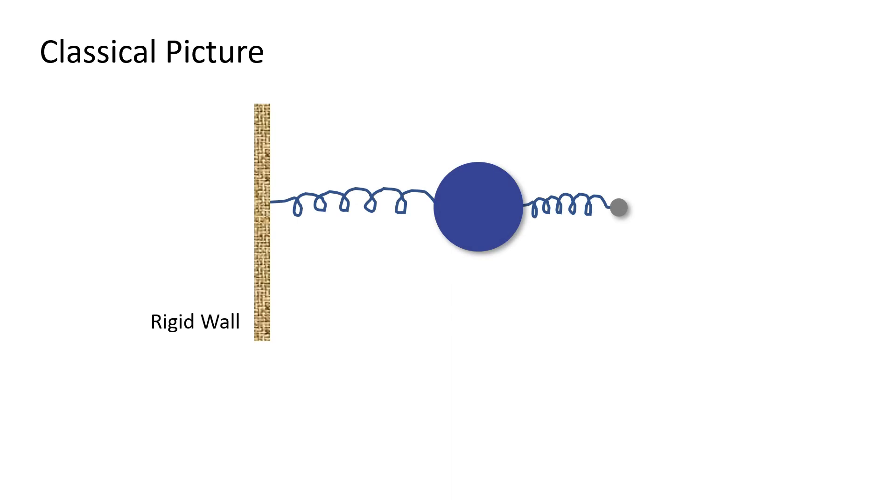If we try to understand this as a classical picture, if two particles interact in some way and one is much heavier and another is a light particle, then the light particle will behave or move essentially as a slave of the heavy particle. That means this light particle will simply follow the heavy particle wherever it goes.